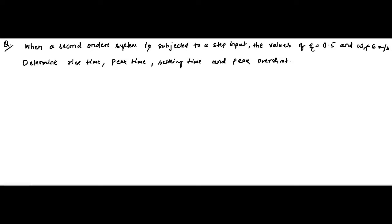We have discussed about time response analysis, or time domain analysis, of zero order, first order, and second order systems. We also discussed the basic time response specifications such as rise time, peak time, delay time, settling time, and peak overshoot. In the next series of videos we will be discussing questions and problems on time response parameters and time domain analysis of systems.